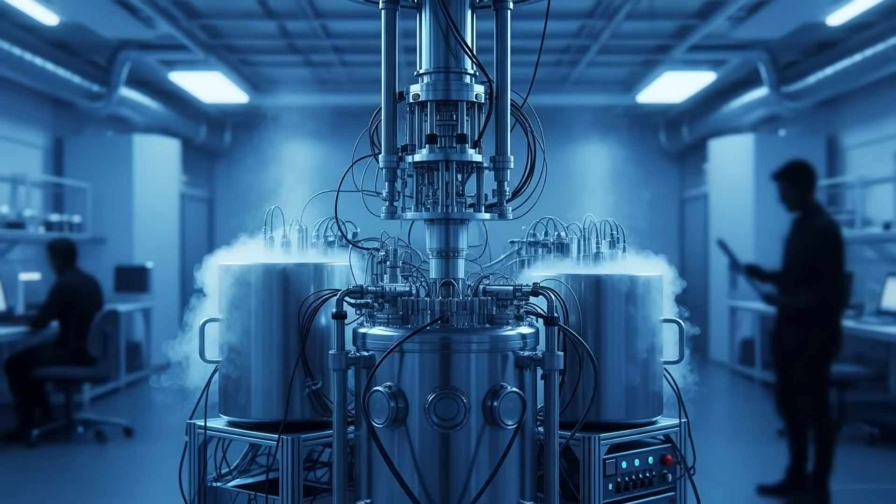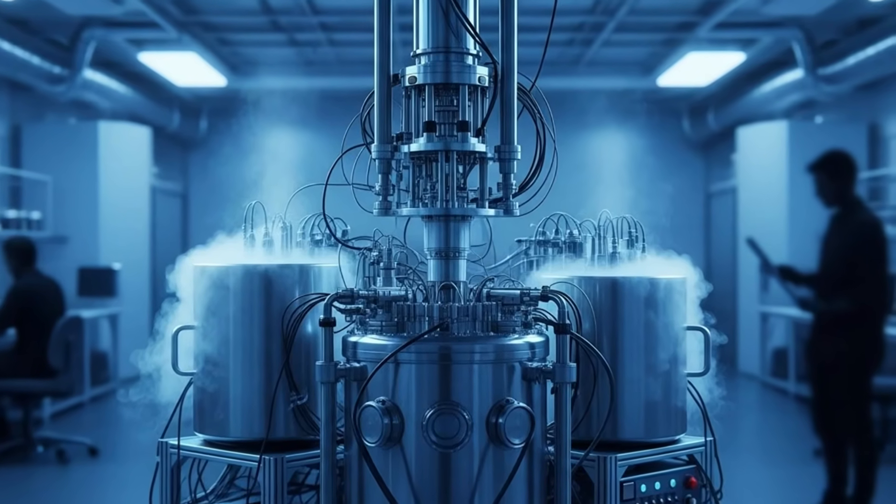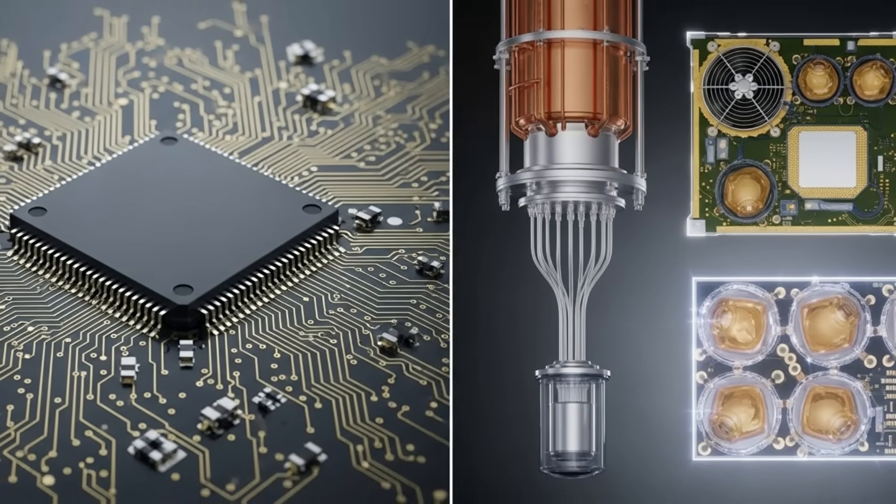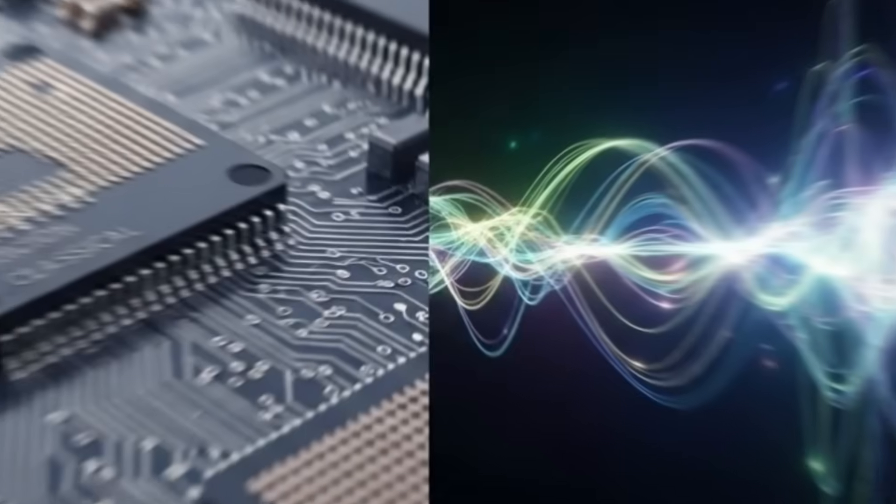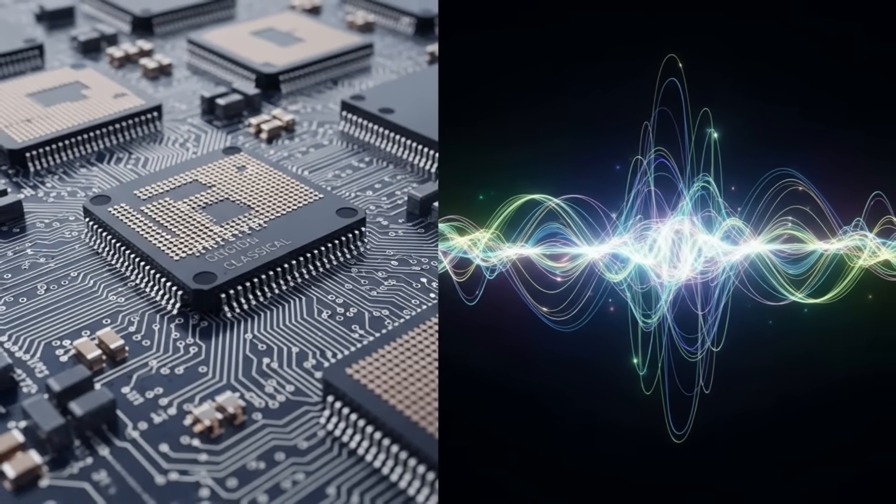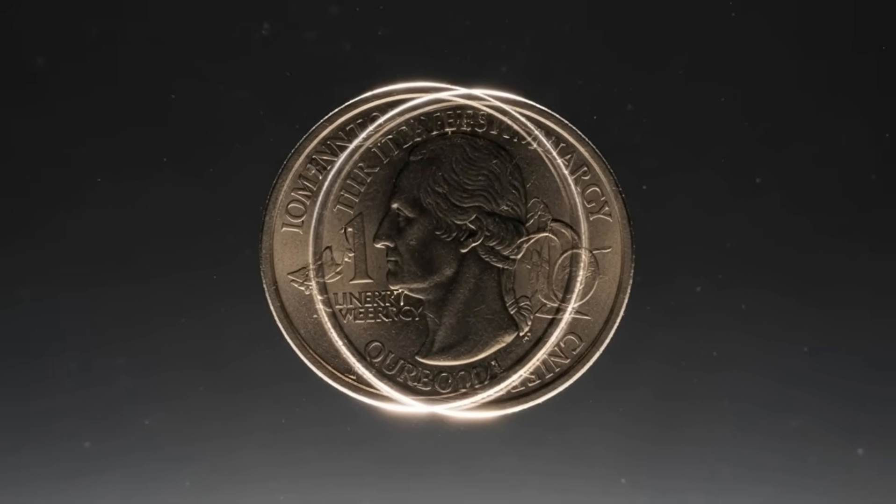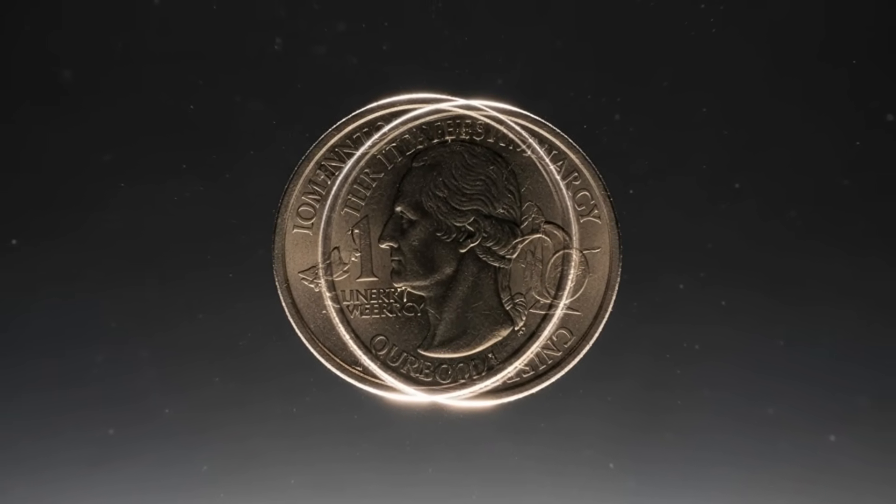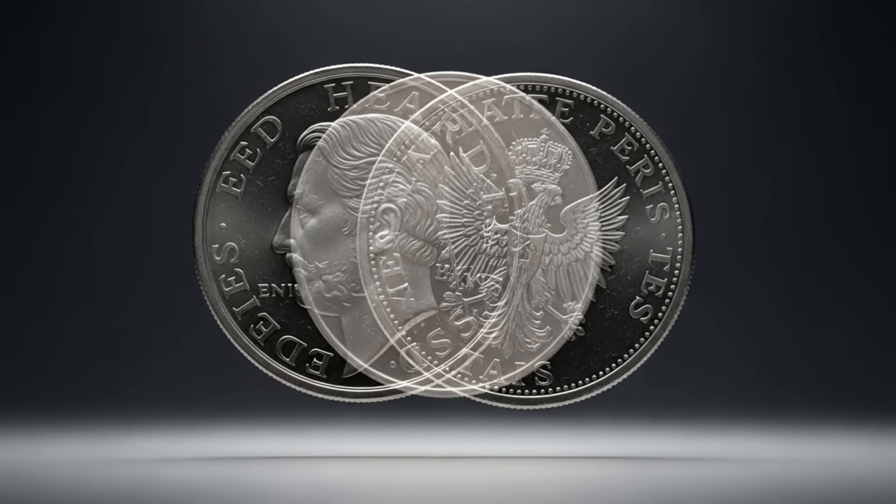Google's Willow chip didn't just perform a calculation. It performed a benchmark test called random circuit sampling, something so complex that the world's most powerful supercomputers would need 10 septillion years to complete it. Let me put that in perspective. 10 septillion years is a one followed by 25 zeros. The universe itself is only 13.8 billion years old. If you started this calculation at the Big Bang, you wouldn't be finished now. You wouldn't be finished when the last star dies. You wouldn't be finished when the universe itself collapses into cold darkness. Willow did it in five minutes.